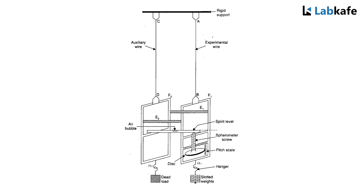These frames are suspended from two wires AB and CD of the same material, length and cross section. The upper ends of the wires are screwed tightly in two torsion heads A and C fixed in the same rigid support, where AB is called experimental wire and CD is called auxiliary or reference wire.